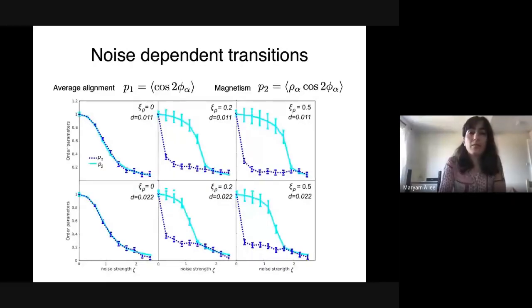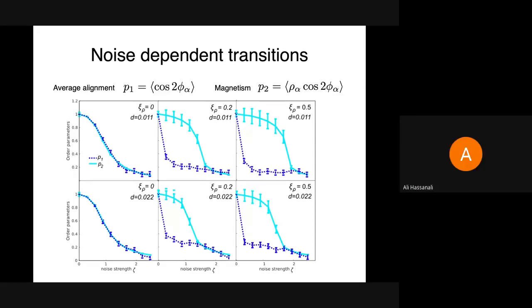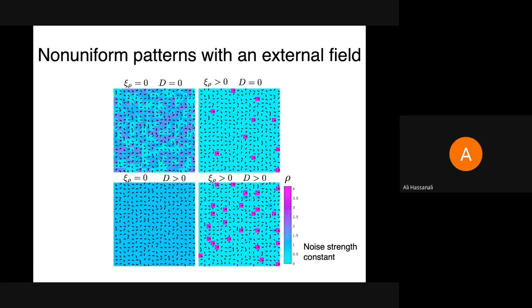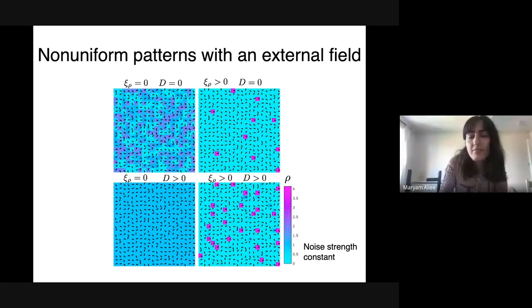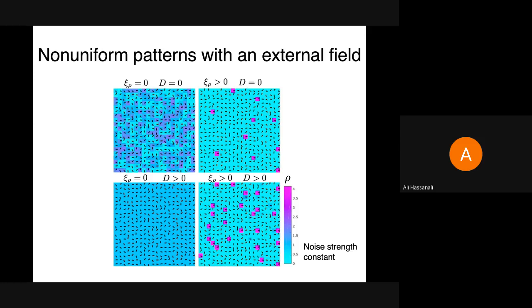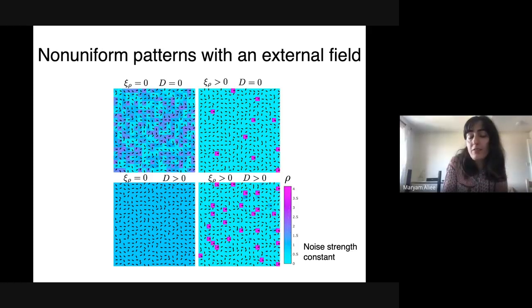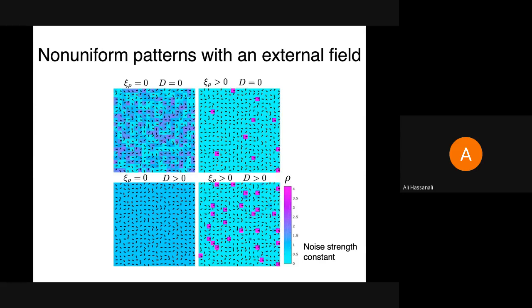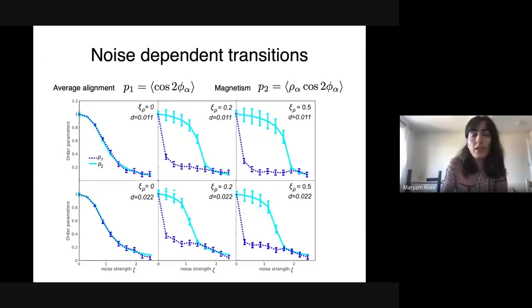Could you go back to the previous slide? Did you look at spatial orientational correlations as a function of distance between sites? Yeah, there's almost no correlation at finite temperature. At zero temperature everything is aligned, but at finite temperature when it's about the transition, there's no correlation.